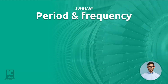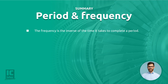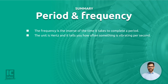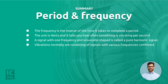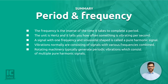To summarize this chapter: the frequency is the inverse of the time it takes to complete a period. The unit is hertz and it tells you how often something is vibrating per second. A signal with one frequency and sinusoidal shape is called a pure harmonic signal. Vibrations normally consist of signals with various frequencies combined. Rotating machinery typically generates periodic vibrations which consist of multiple pure harmonic signals.